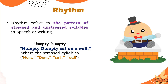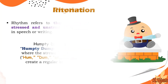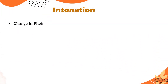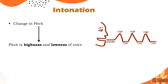This pattern of stressed and unstressed syllables in speech or writing is known as rhythm. Rhythm creates a regular beat in a poem. Intonation is the change in pitch. Pitch is the highness and lowness of the voice — sometimes we make our voice high, sometimes low. That change — high or low — is called intonation. There are three types of intonation.